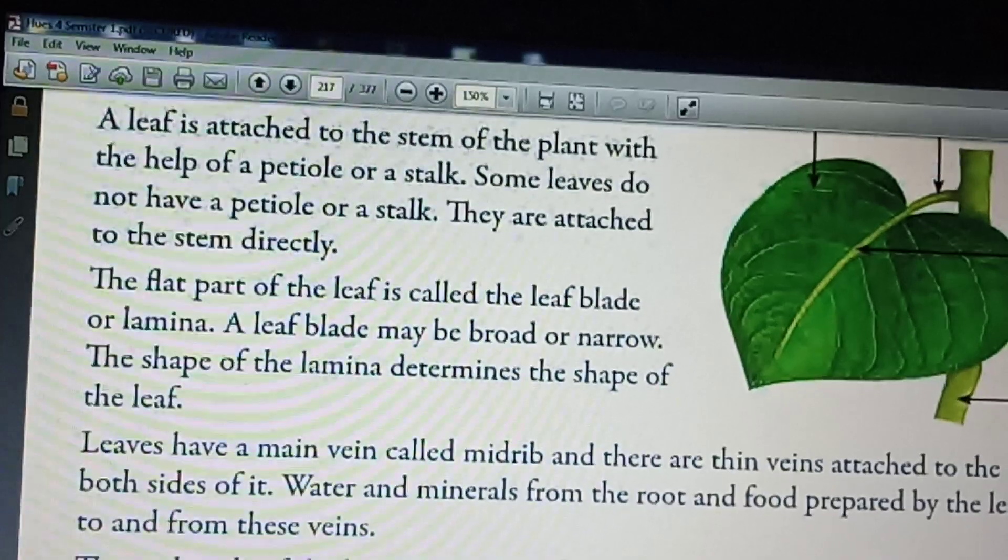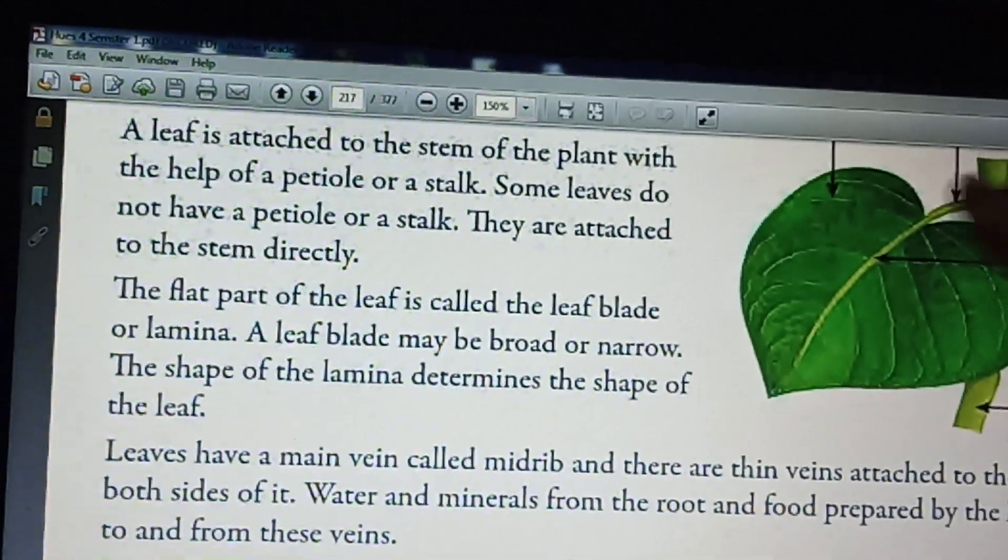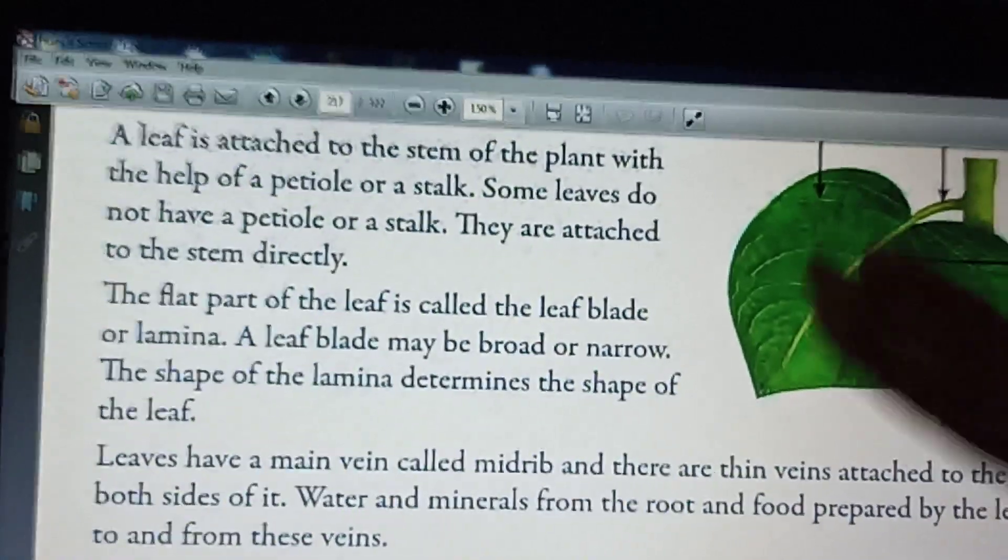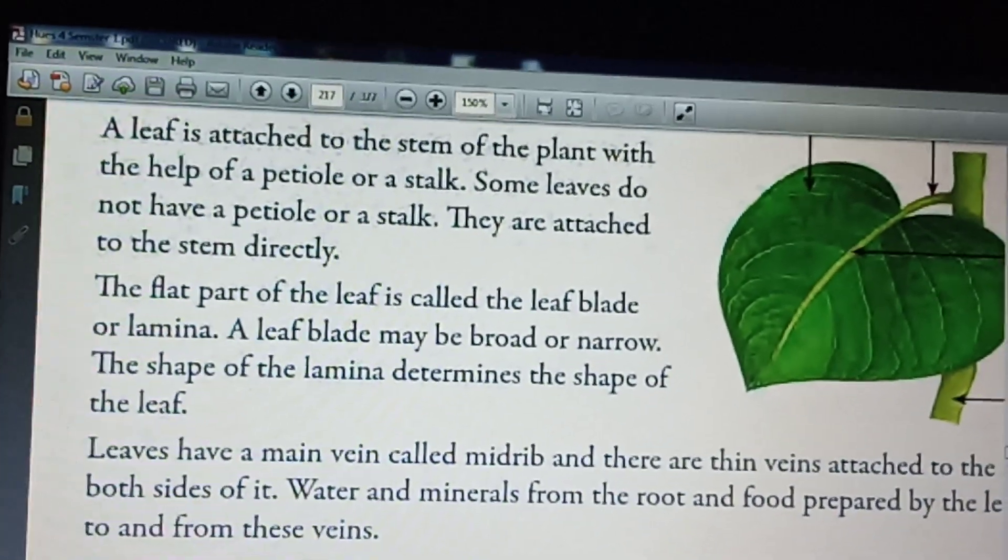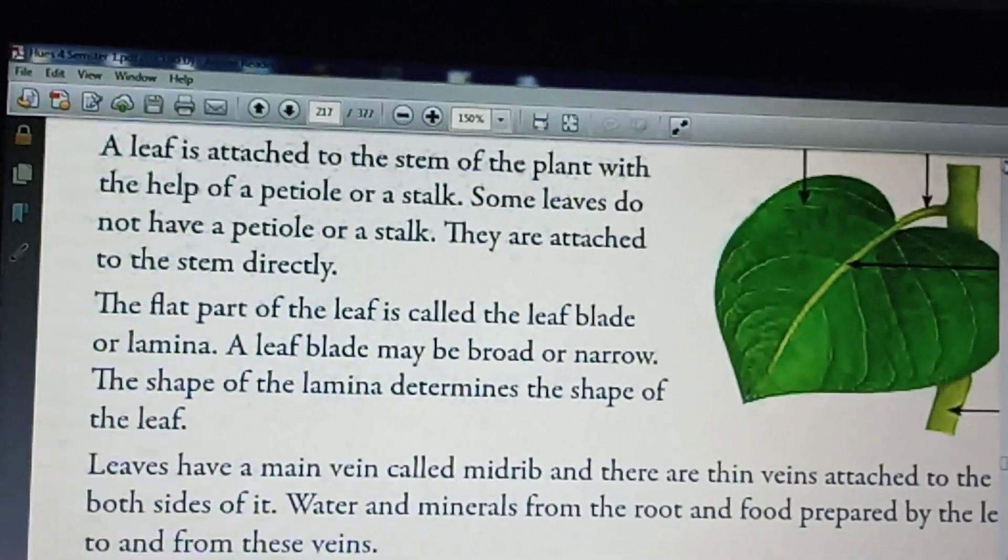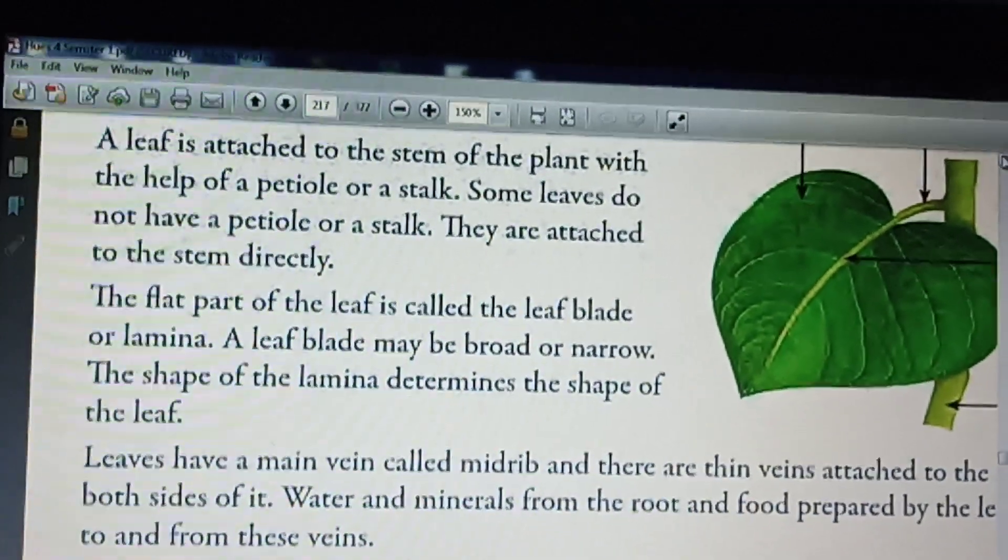The flat part of the leaf is called the leaf blade. This is the flat part of the leaf. It is known as leaf blade or lamina. A leaf blade may be broad or narrow. The shape of the lamina determines the shape of the leaf.